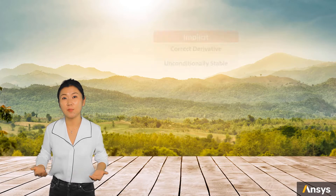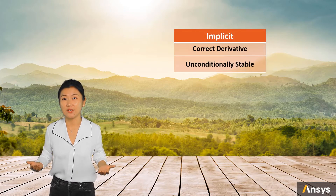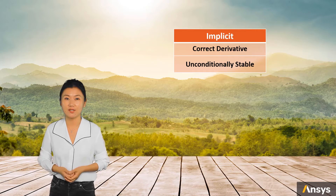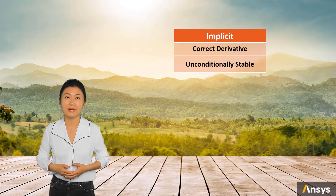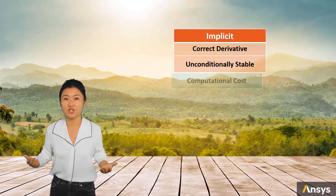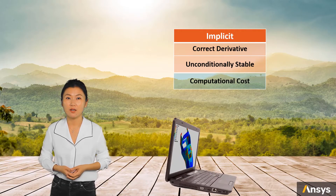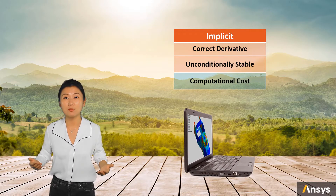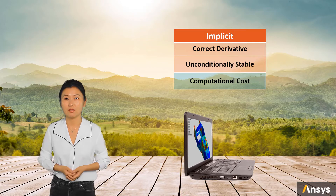So far, you might consider implicit method as an ideal method — using correct derivatives in time stepping and having stability advantages. However, the biggest issue of the implicit method is its high requirement of computational cost. This puts limits on how small the time step size can be used.